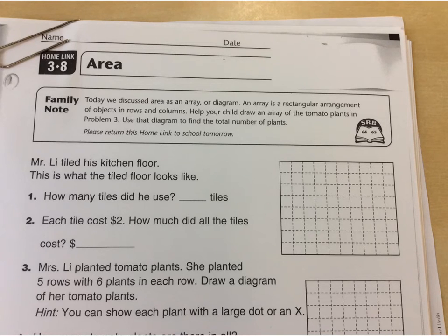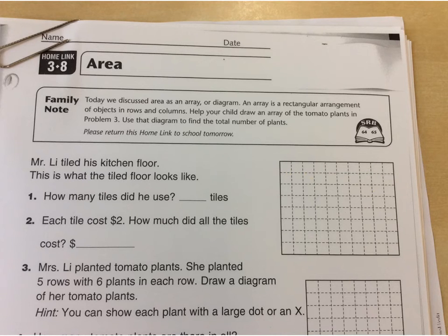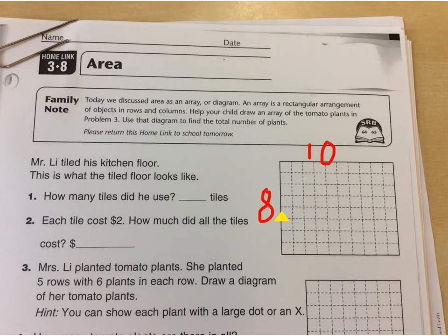Number one: Mr. Lee tiled his kitchen floor. This is what the tiled floor looks like — you can see his tiles. How many tiles did he use? You could count every single tile, but let's use the method we just learned. This top row is 10, and the side looks to be 8. So to figure out how many tiles, 8 times 10 is your answer — or you can count them if you don't know 8 times 10.